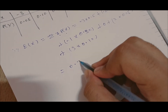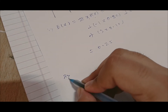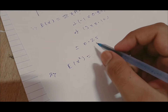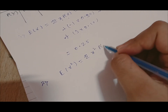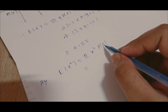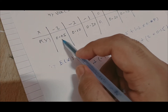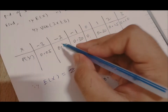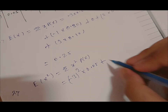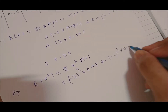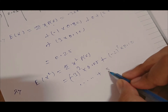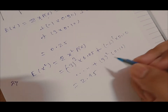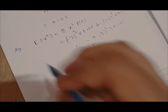E(X) equals 0.25. The second question is to find E(X²). E(X²) = summation of x²·P(x), so we square each x value and multiply by its probability. For example, (-3)²(0.05) + (-2)²(0.10) and so on for all values, including 3²(0.10). This gives 2.95.